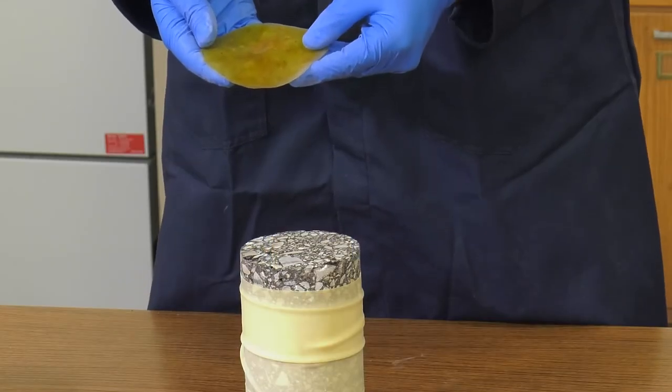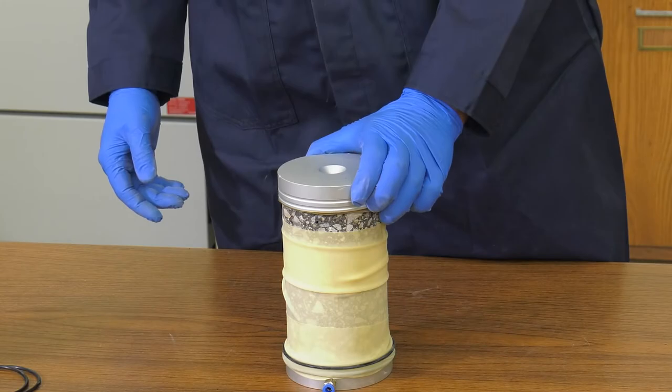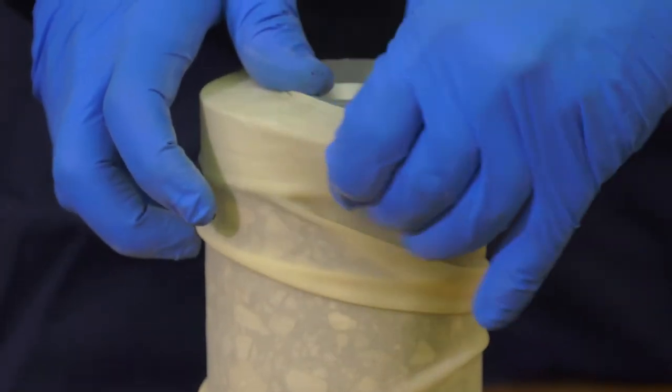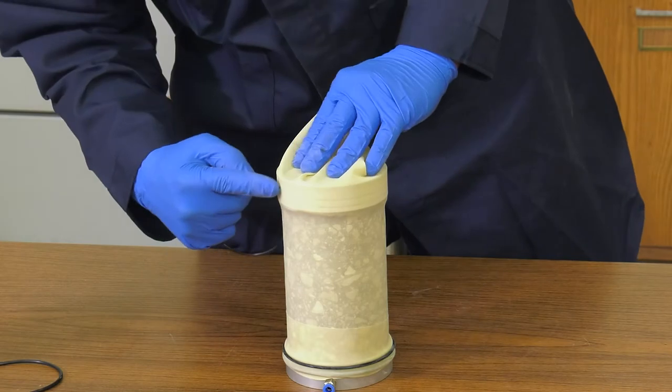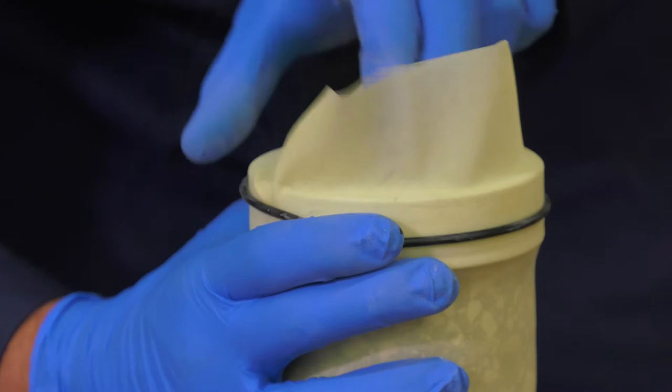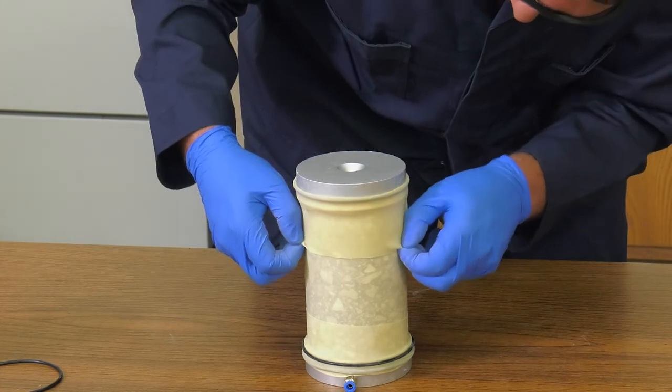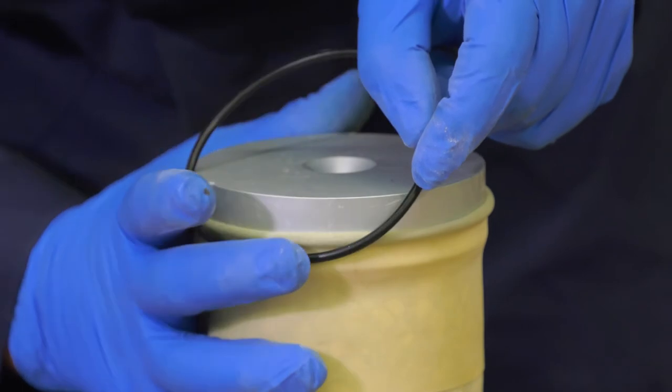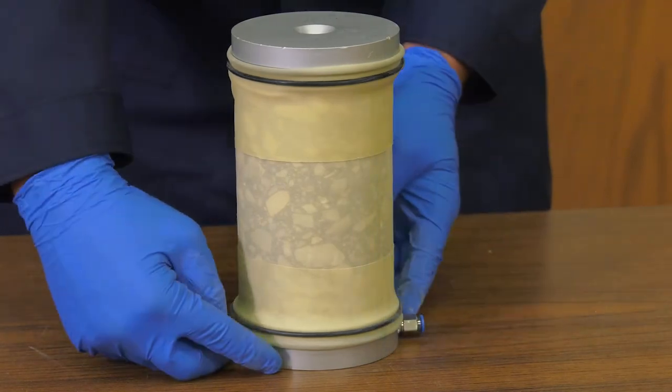Take the circular latex membrane prepared for the upper platen and place on top of the specimen. Position the upper platen on top of the specimen and pull the membrane up and over the platen. Place an O-ring on the top groove, then fold the membrane down and straighten. Attach an O-ring to the second groove. The specimen assembly is ready for conditioning.